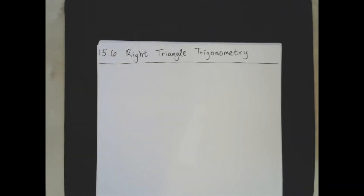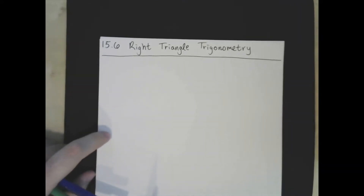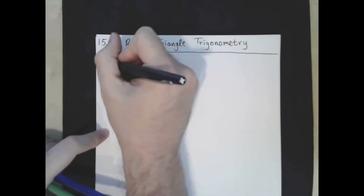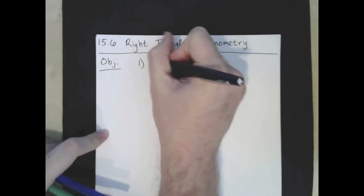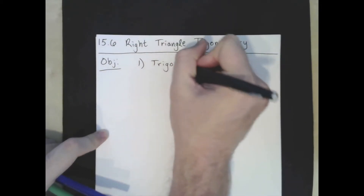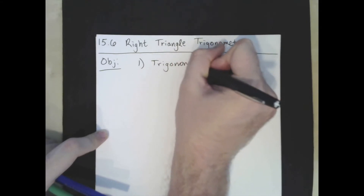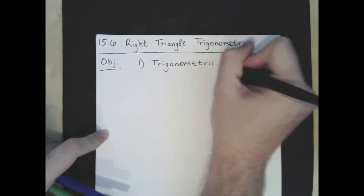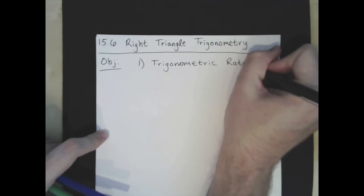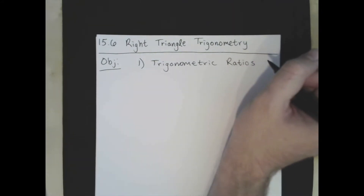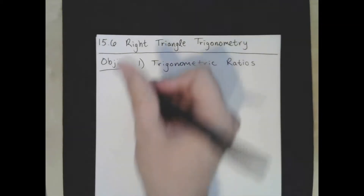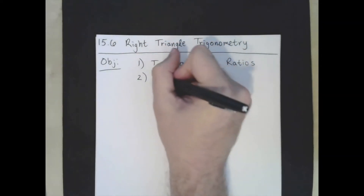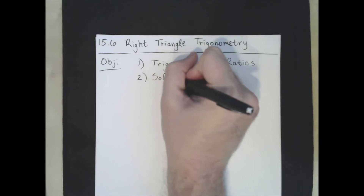Our final section, 15.6, is all about right triangle trigonometry. We have two things to talk about in this section: number one is the trigonometric ratios — we're going to discuss where they come from and their definitions according to right triangles — and then the second thing we're going to look at is solving right triangles.